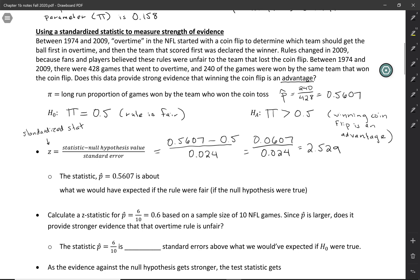We can interpret that by saying our statistic 0.5607 is about 2.529 standard errors above what we would have expected if the rule were fair, if the null hypothesis is true. This is another way of saying how extreme this value is.